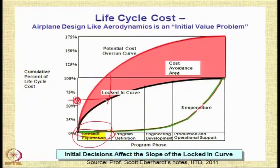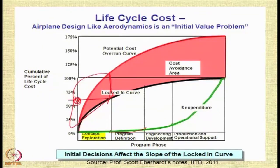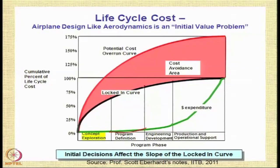If you do not do a good job in the concept exploration phase, you can have a huge cost overrun — the scope for overrun is very high in the conceptual development stage. Then in the program definition phase, some money is spent — this corresponds to the preliminary design stage — and here close to 80–85 percent of the cost is locked in. The concept exploration phase is the one where we have the largest effect on the overall cost of the program.